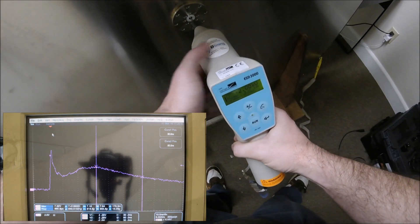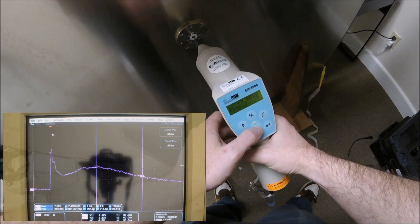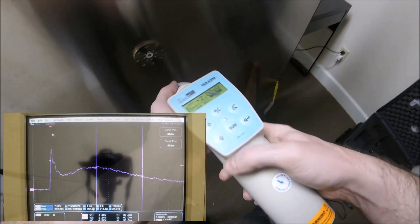In my hand is the EMC Partner ESD3000. We just increased the speed to 10 Hz. These higher speeds are used to identify susceptible points in a device.